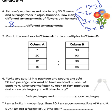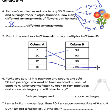Match the numbers in column A to their multiples in column B. The first number is 7 — in the multiples of 7, 7 sevens are 49. 20 multiplied by 2 is 40. 12 will match with 96 because 12 eights are 96. And 15 multiplied by 6 is 90.